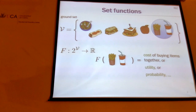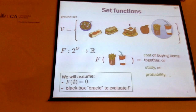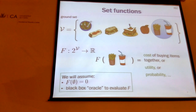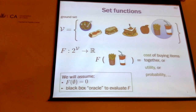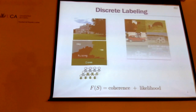So far this looks good — it looks very relevant to real life. We'll assume that the set function is zero at the empty set; that's just really a convention, and then you get something that you can evaluate. So where do set functions come up in machine learning and applications?